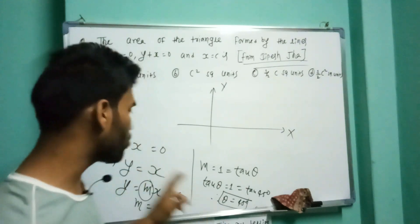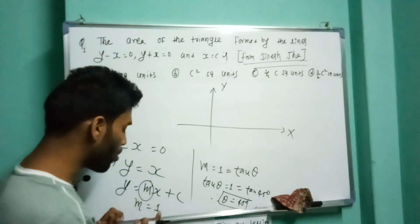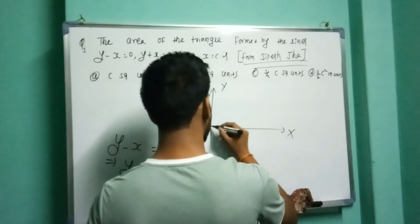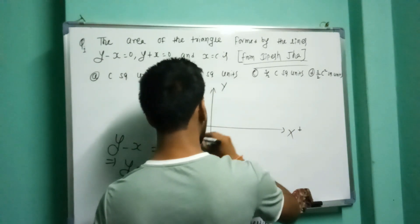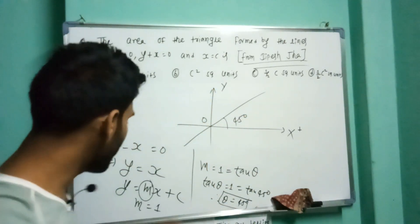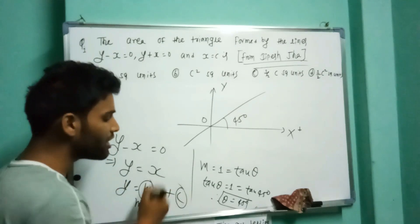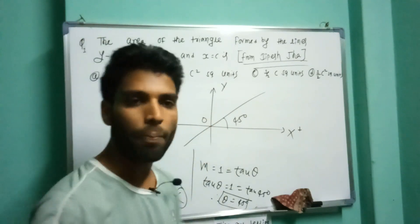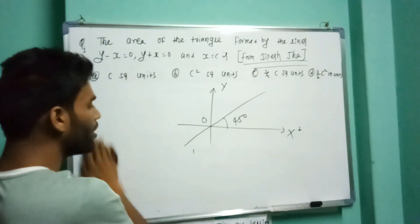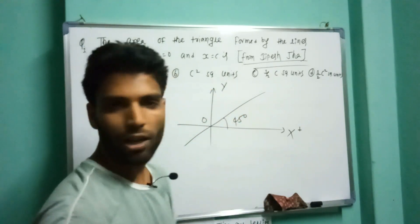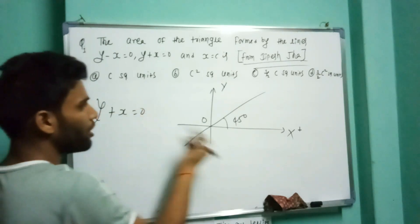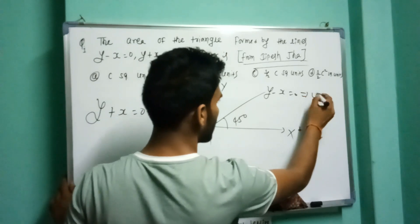y minus x equals 0 means y equals x. This line has slope 1, which means it makes a 45-degree angle with the x-axis. This line passes through the origin because the constant term c is 0, meaning y-intercept is 0. So simply y equals x is a line at 45 degrees with slope 1.